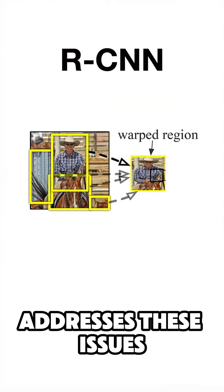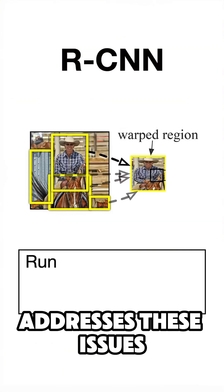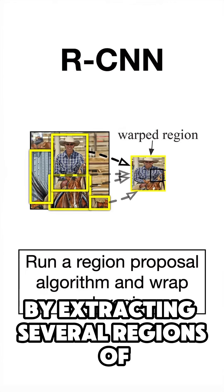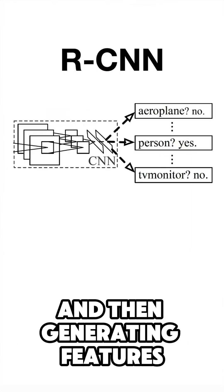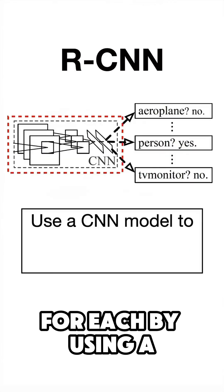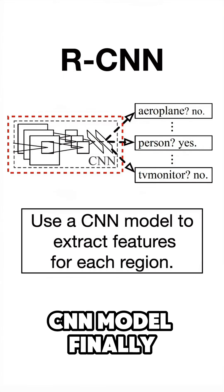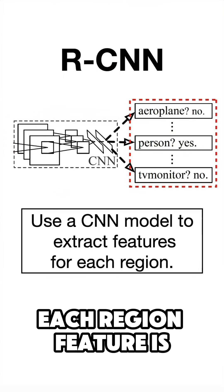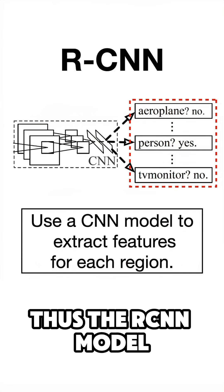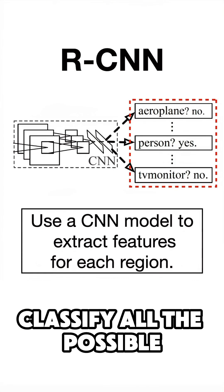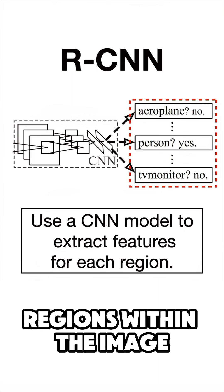The RCNN model addresses these issues by extracting several regions of interest from the image and then generating features for each by using a CNN model. Finally, each region feature is classified with an SVM model. Thus, the RCNN model removes the need to classify all the possible regions within the image.